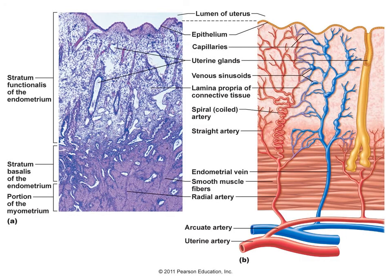This cross-section slide and schematic drawing show that because there is a lot of growth of that tissue, there is an extensive blood supply to the endometrial tissue.